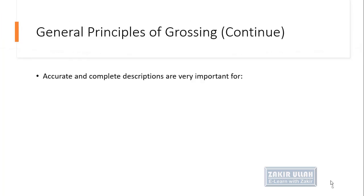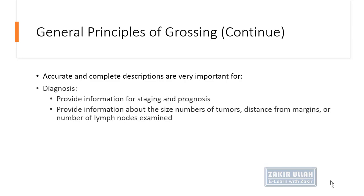Gross examination is very important to provide accurate and complete details and description, which are very important for the diagnosis of the disease. The gross examination provides information about the staging and prognosis of a disease — for example, if a cancer is present, what is the stage, what is the grade, and what will be the prognosis, the expected outcome of the disease.